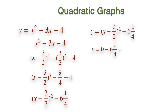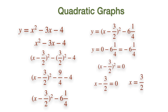The smallest value the bracket can be is zero, regardless of the value X may take, because the power of 2 makes the term always a positive value. Therefore, the smallest value of Y, or the lowest point on the graph, will be minus 6 and a quarter. Since (X minus 3/2)² equals zero, it can be solved to give X equal to 3/2, so the minimum point occurs when X is 3/2.